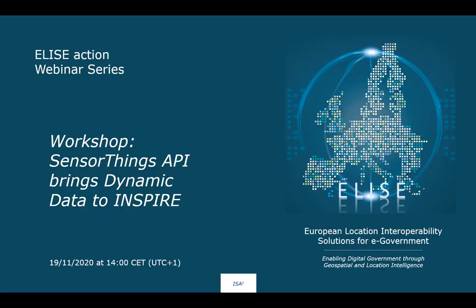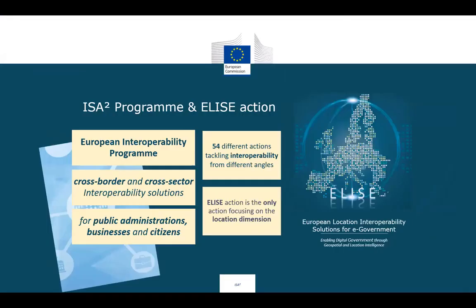Before going to the workshop, let's speak a few words about ELISA for those who don't know. ELISA stands for European Location Interoperability Solution for E-Government, and is an action part of the ISA² program — a European interoperability program aiming to provide cross-border and cross-sector interoperability solutions for public administrations, businesses and citizens. There are 54 different actions tackling interoperability from different angles, and ELISA is the only one focusing on the location dimension.